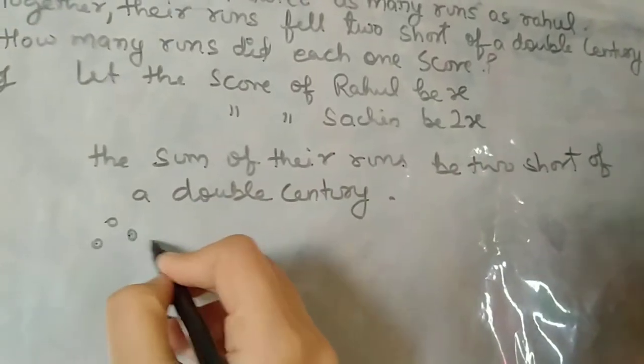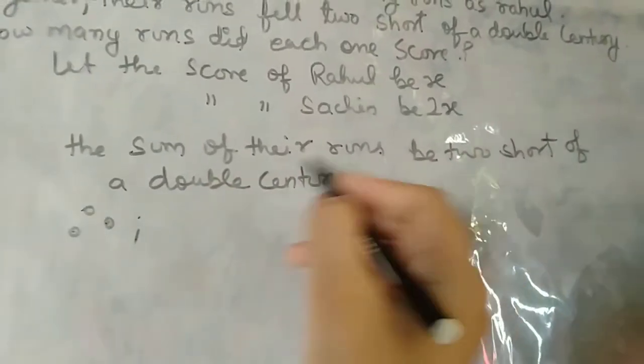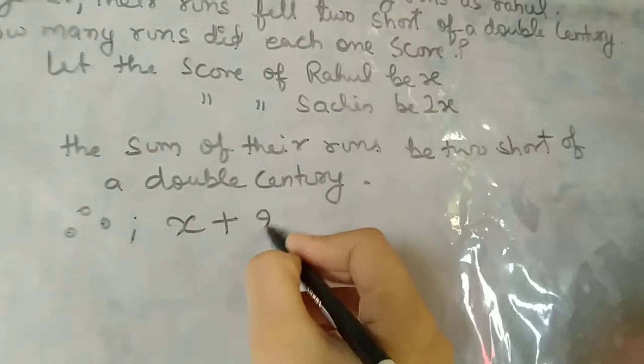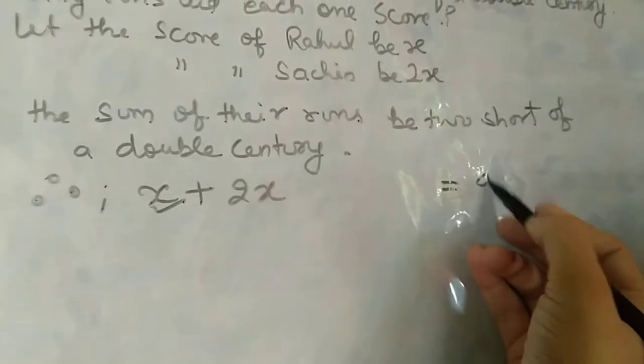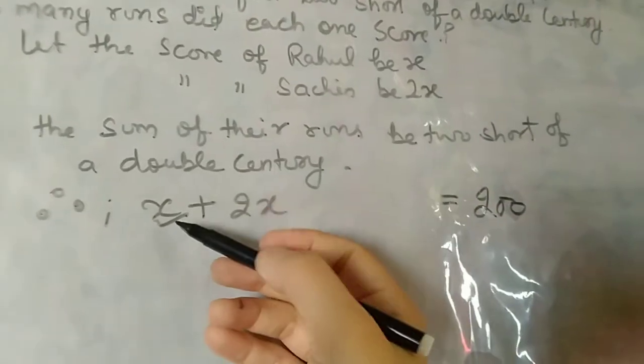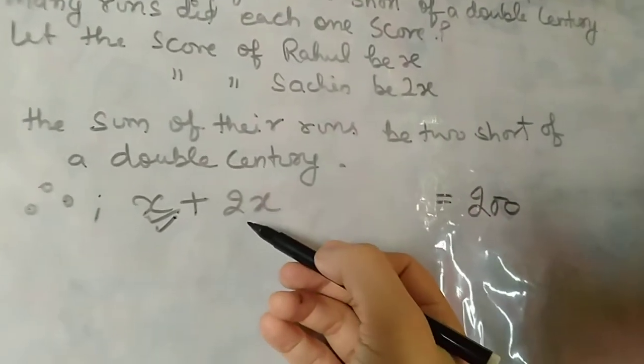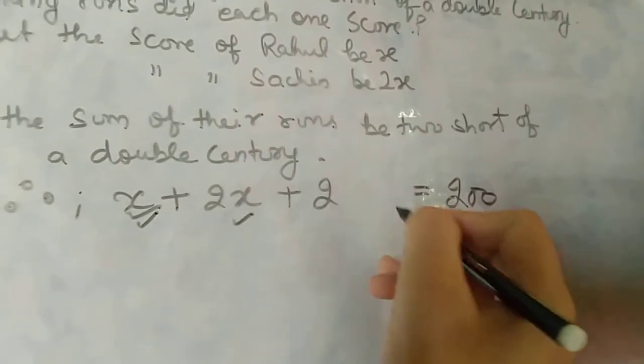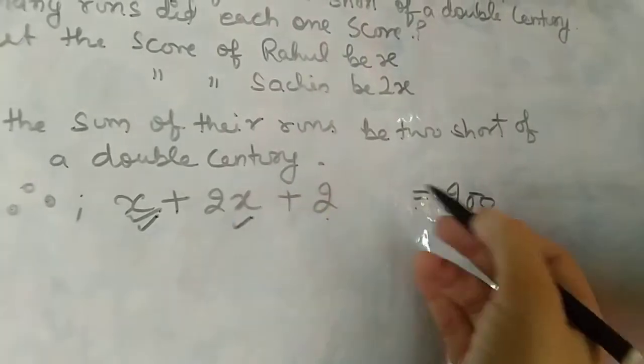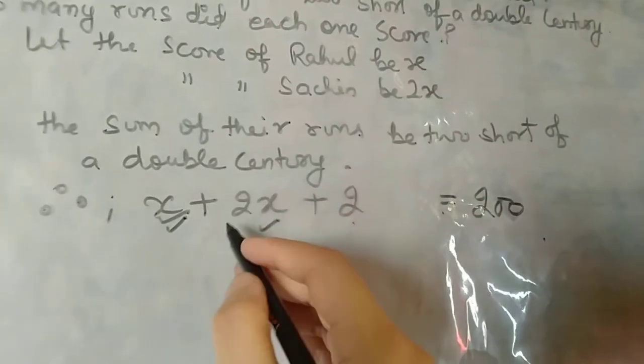Therefore, we add them together: x plus 2x. These are Rahul's runs plus Sachin's score, plus the two runs they were short by. This equals the total score of 200.